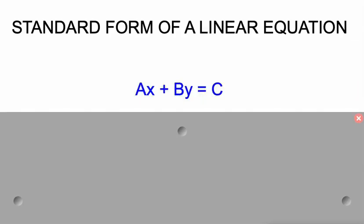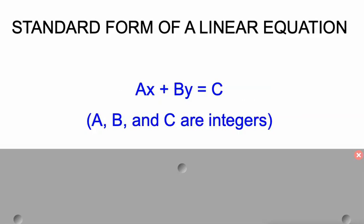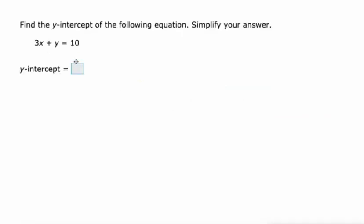Standard form of a linear equation, as a reminder, looks like this: ax plus by equals c, where a, b, and c are all integers. And that's what we're given. So ax plus by equals c, where a is three, b is one, and c is 10.